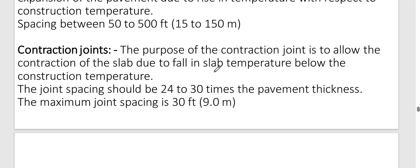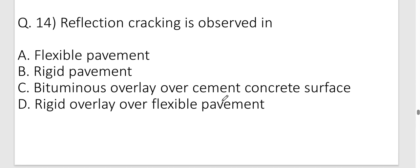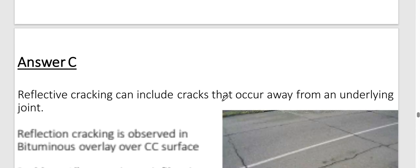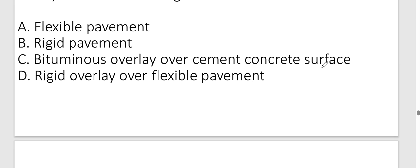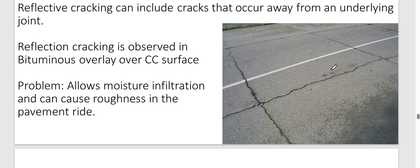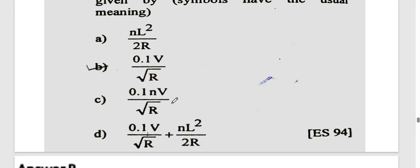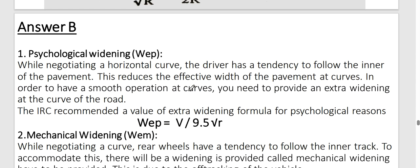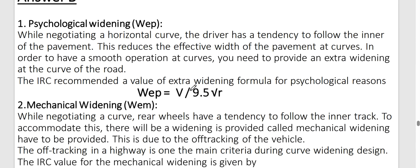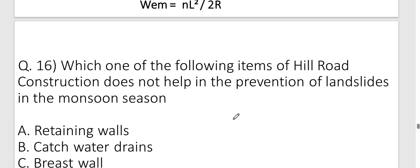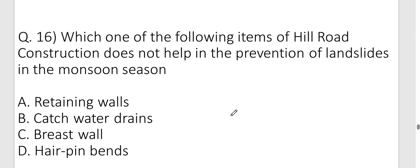Reflection cracking is observed in bituminous overlay over cement concrete surface. There are two types of road curve widening: psychological widening, with formula 0.1V / √R, and mechanical widening, with formula nls² / (2R).